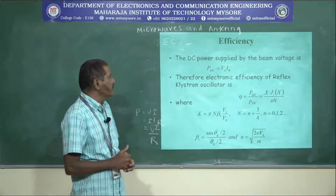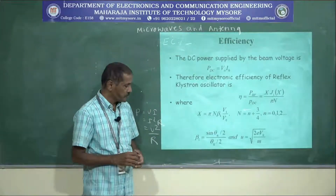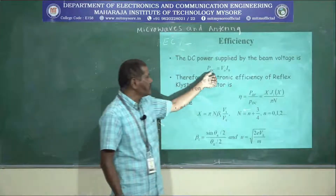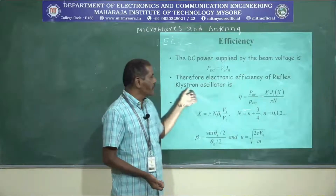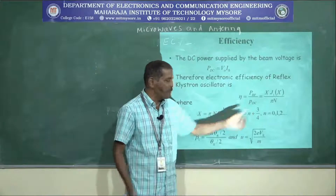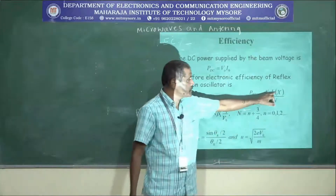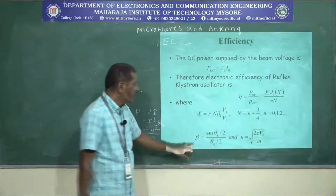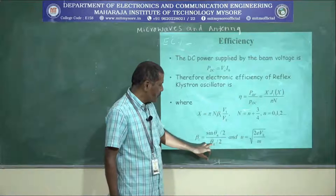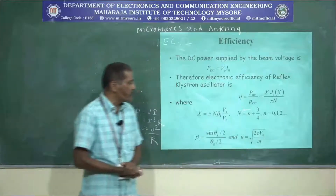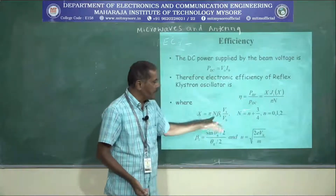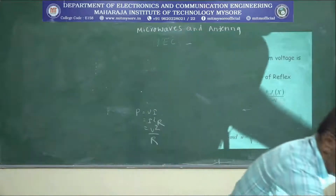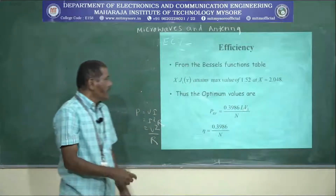To calculate efficiency, we first calculate the DC power supplied by the beam voltage: PDC = V0 × I0. The efficiency of the reflex klystron oscillator is calculated from PRF/PDC = X × J1(X) / (πN), where X is calculated from its equation, N = n + 3/4, β1 = sin(θg/2) / 2, and U = √(2e × V0/m). Using these equations we can calculate the RF power generated and the efficiency.